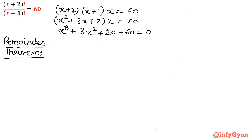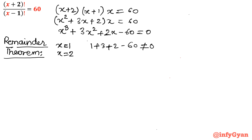The theorem states that you have to identify one factor by any method, including hit and trial. Let me put x = 1 and check whether that will be our solution. 1³ = 1, 3 times 1² = 3, 2 times 1 = 2, minus 60 — is this equal to 0? No, so x = 1 is not a root.